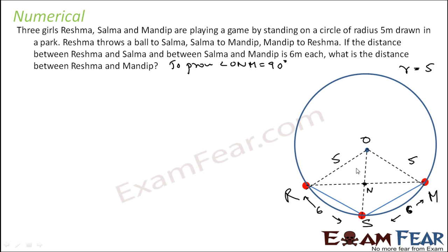So both the angles subtended by these chords at the center will be the same. If the angles are the same and OM is a common length, then triangles ORN and OMN will both be congruent.